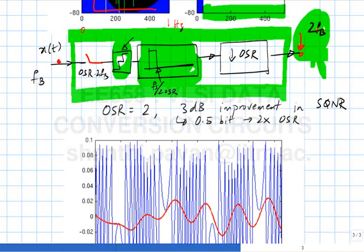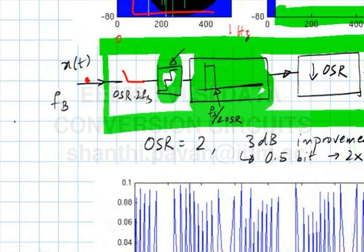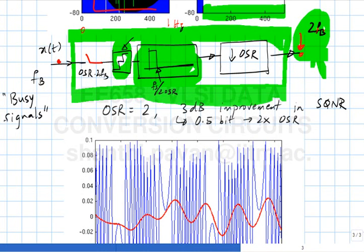A class of signals for which this does not work at all: DC. If you put in a DC signal and oversample by any factor, the quantization error is constant and you cannot get rid of it. For this approach to work, the input must vary — such signals are called busy signals. This terminology appears frequently in sigma-delta work. The digital engine consisting of the sharp low-pass filter plus the sample-dropping stage is called the decimation filter.